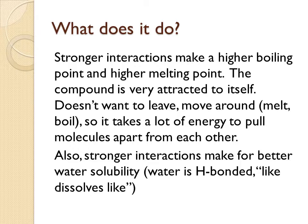Stronger interactions make it more difficult to boil or melt something, resulting in a higher boiling point and melting point. That's why ionic compounds are at the top of the chart — they have the strongest interactions and the highest boiling and melting points. Two ionic pieces do not want to leave each other; they don't want to become a liquid or boil into a gas. It takes a lot of energy and heat to pull those molecules apart.